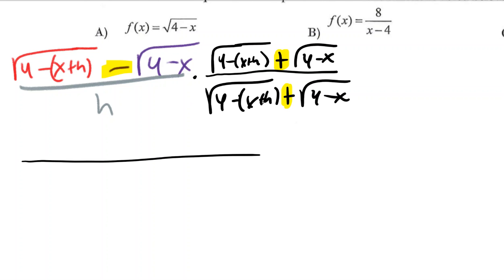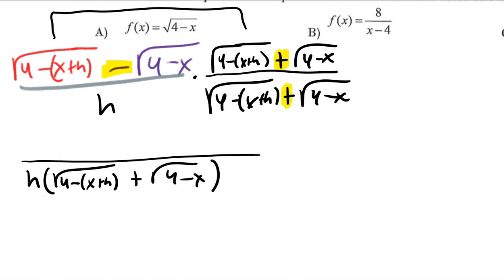As terrible as it looks, it actually comes together pretty quickly. The denominators, you can't do much - you've got h times this stuff and that's pretty much the only thing we can do. The numerators, we got two terms times two terms which is going to be FOIL, but most of this is going to either cancel out or simplify nicely.